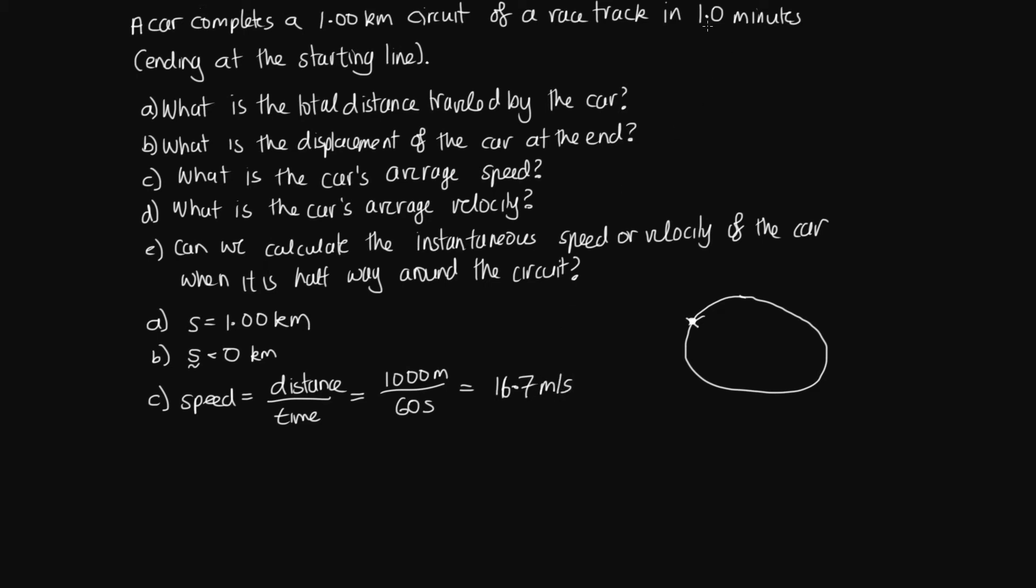So we're doing 1000 divided by 60 and we end up with 16.7 metres per second. And then strictly speaking because this 1.0 minutes is in two significant figures, we should present our final answer with two significant figures. So that's 17 metres per second is the average speed of the car as it completes this circuit.